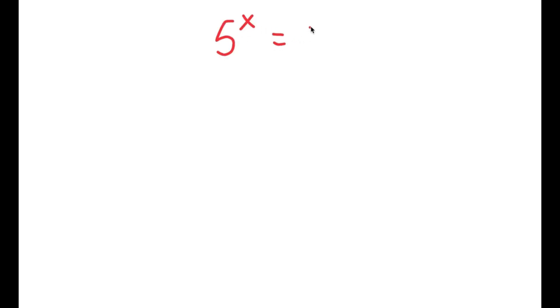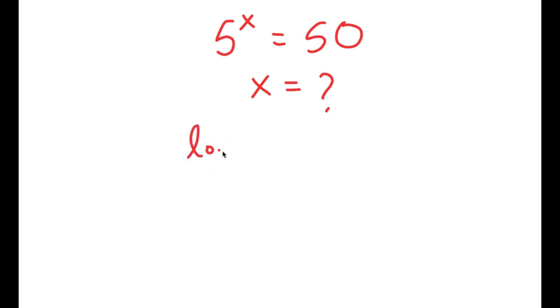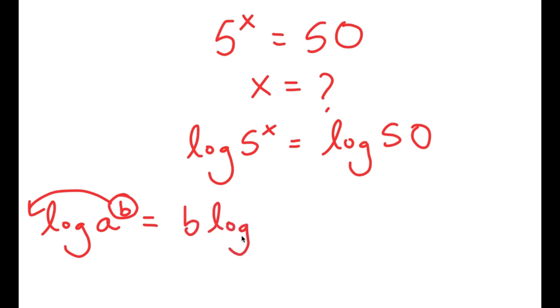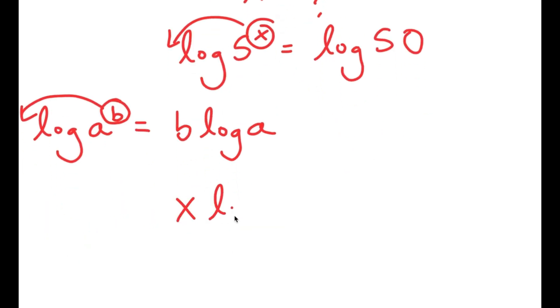In this video, I'm going to solve the equation 5 to the power of x equals 50. To find the value of x, I'm going to start by taking the log on both sides. So I get log of 5 to the power of x equals log of 50. Now, if I have something in the form log of a to the power of b, I can move the exponent to the front, giving b times log a. So x times log 5 equals log 50.